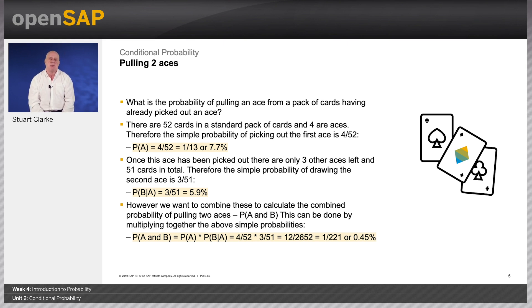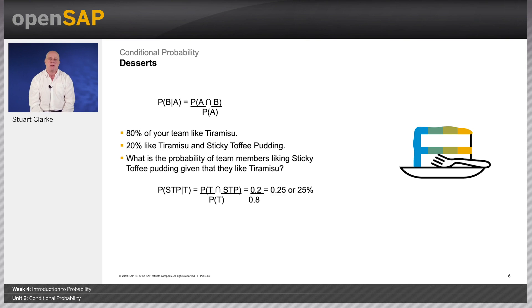These combine to calculate the combined probability of pulling two aces. This can be done by multiplying together the above simple probabilities. So the probability of picking two aces equals the probability of picking the first ace multiplied by the probability of picking the second ace, given that the first ace was picked. This comes to 12 divided by 2652, which is 1 divided by 221, or 0.45%.